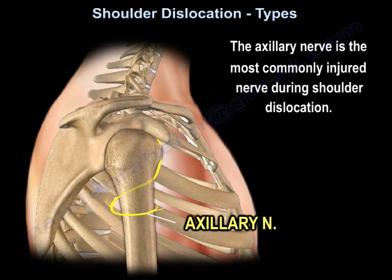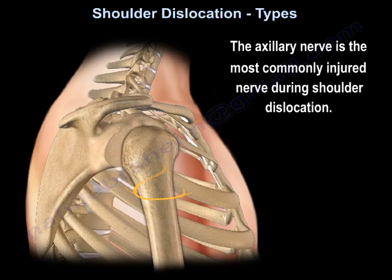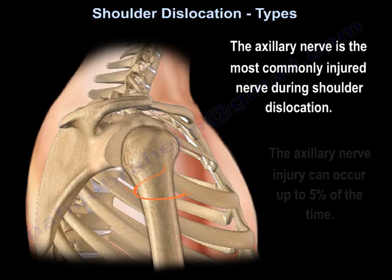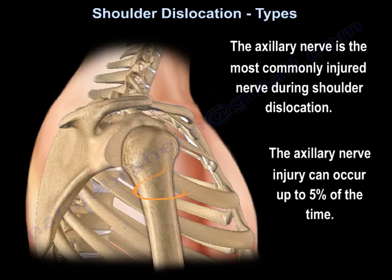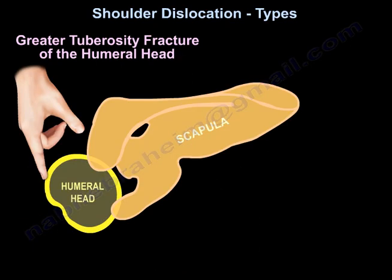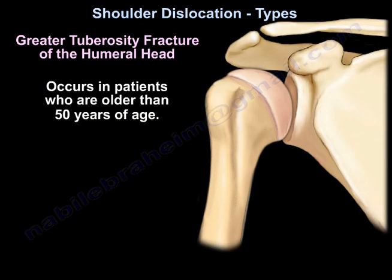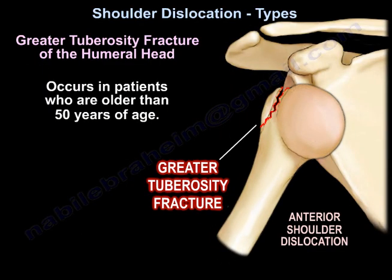The axillary nerve is the most commonly injured nerve during shoulder dislocation. Axillary nerve injury can occur up to 5% of the time. Greater tuberosity fractures occur in patients with anterior dislocations who are older than 50 years of age.